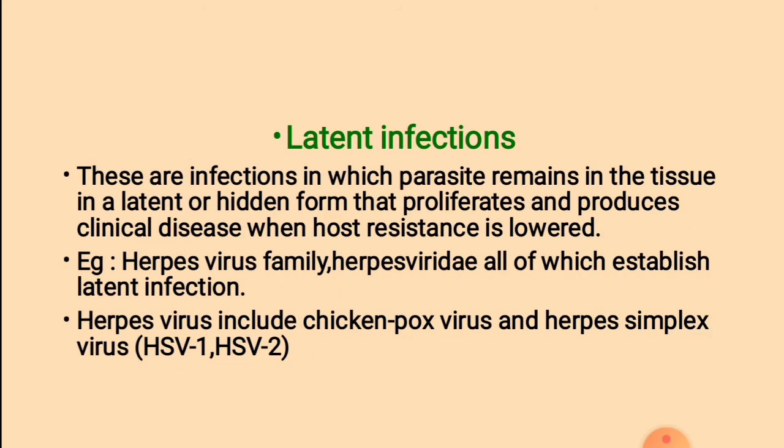3. Latent infections: These are infections in which the parasite remains in the tissue in a latent or hidden form, and proliferates and produces clinical disease when host resistance is lowered. The organisms remain in hidden form — that is known as latent infection. Example: the herpes virus family (Herpesviridae), all of which establish latent infections. Herpes viruses include the chickenpox virus and herpes simplex virus, i.e., HSV-1 and HSV-2.